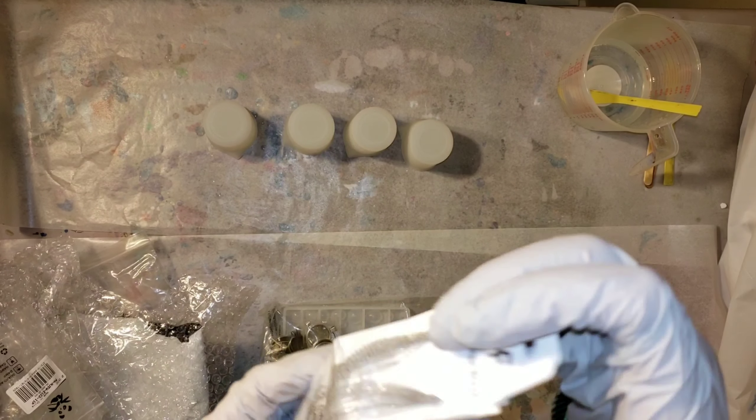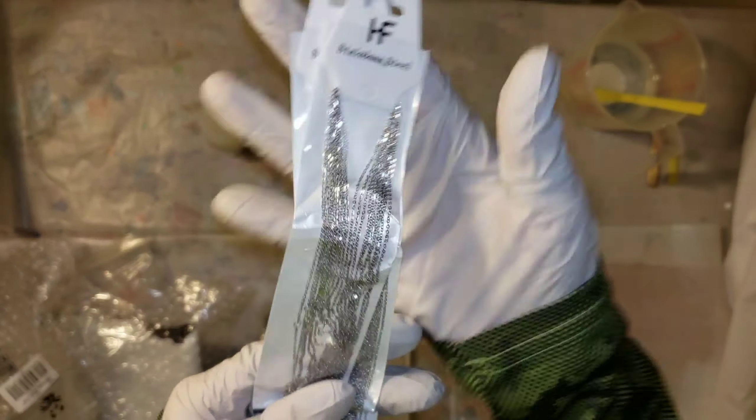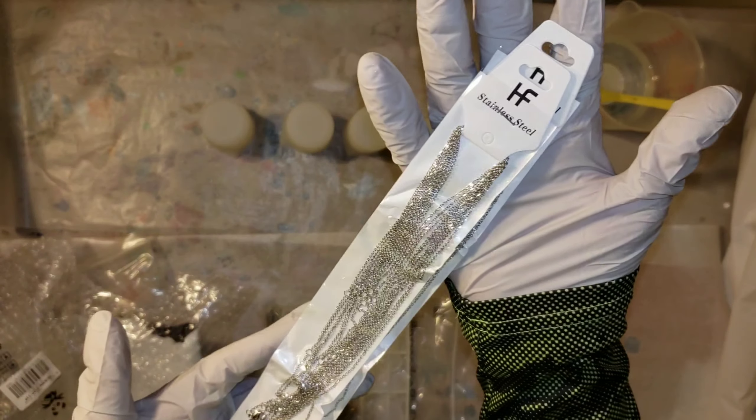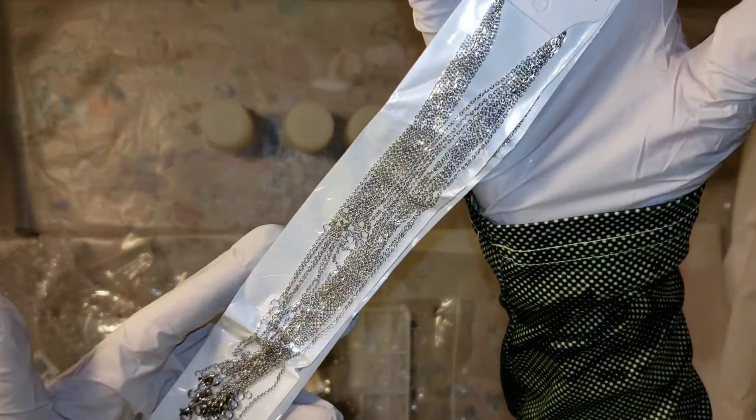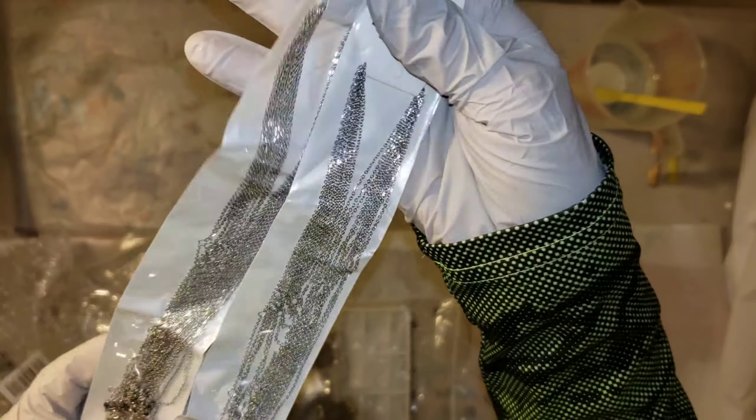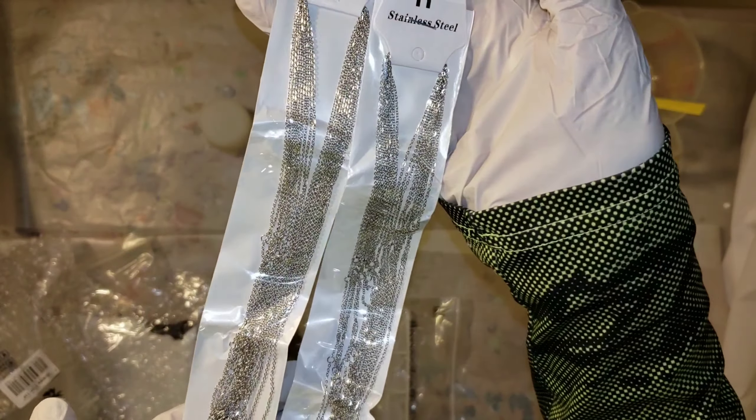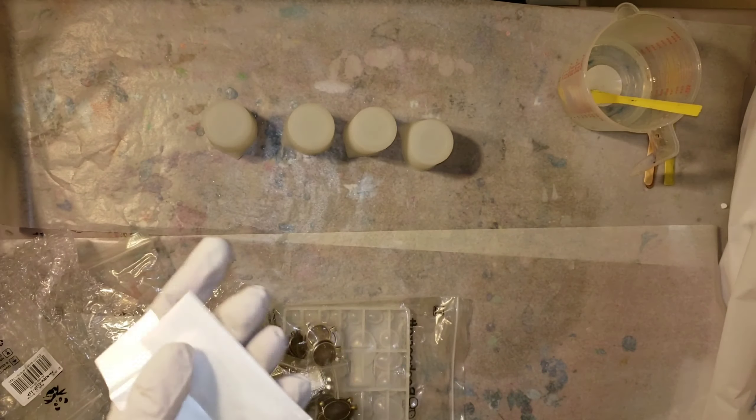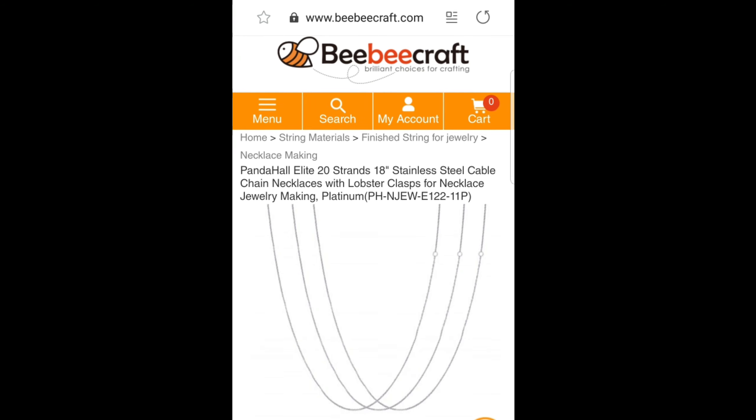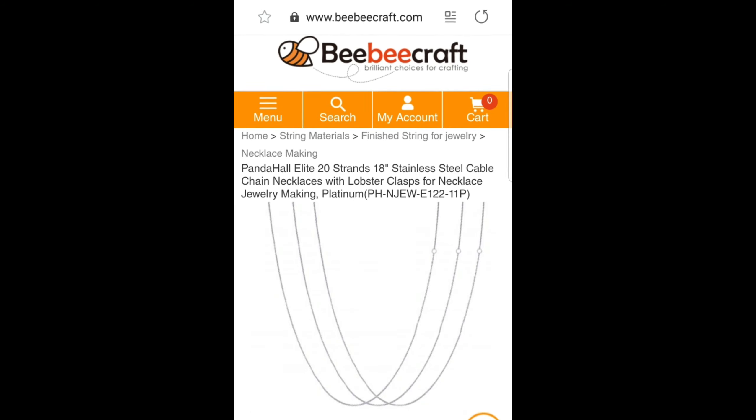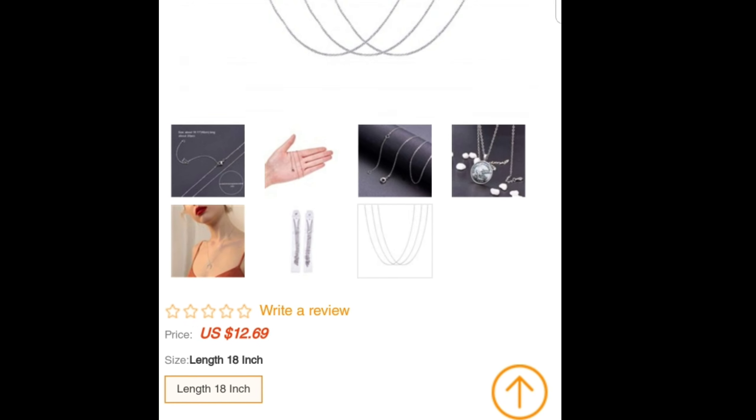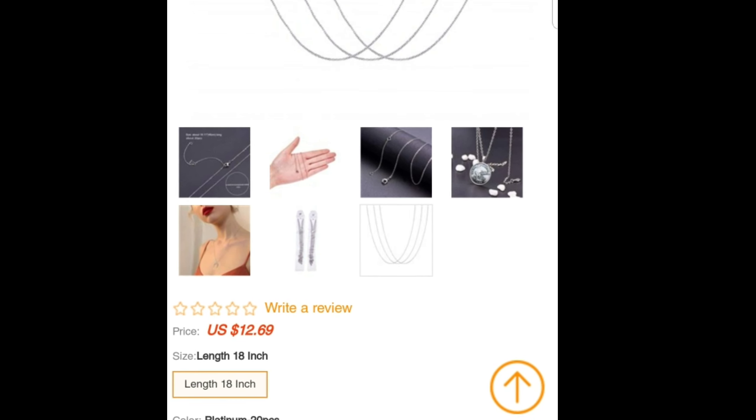So I got these stainless steel 18 inch lobster clasp chains. Look at how pretty and shiny they are too. And they're 18 inches and you get a good amount of them. You get 20 of them and it's only $12.69 for 20 chains, which is really affordable. So that was a really great deal.